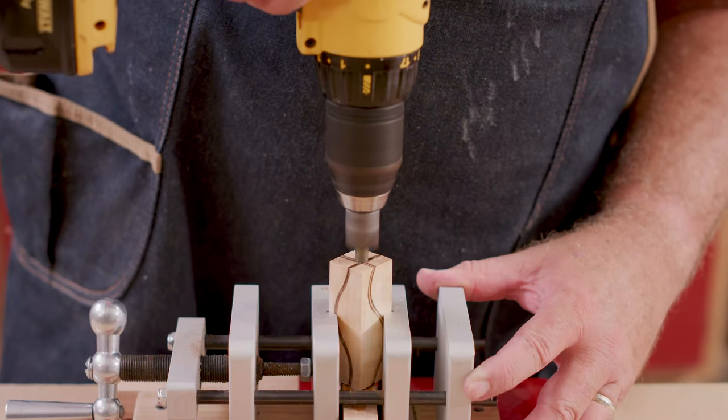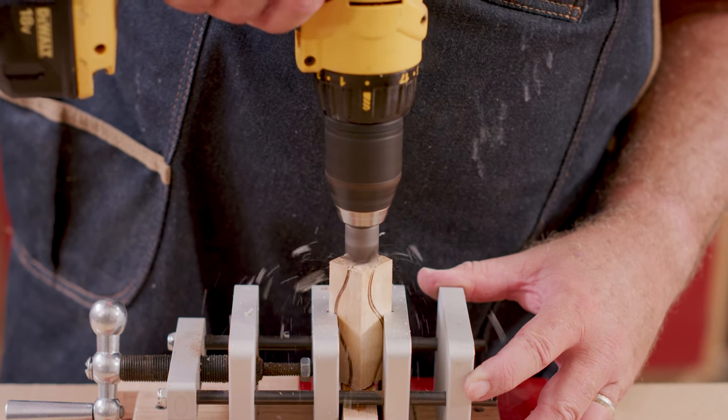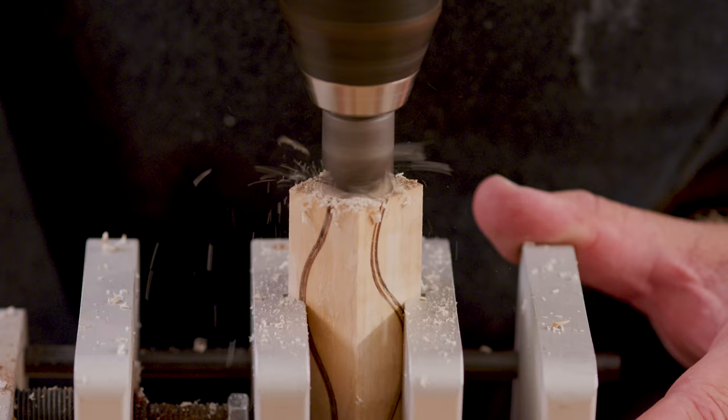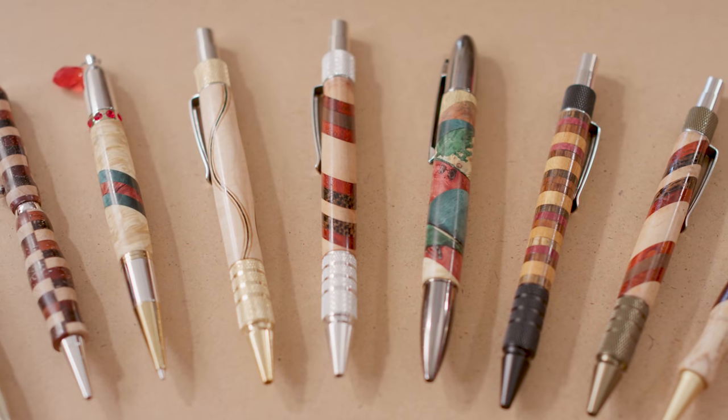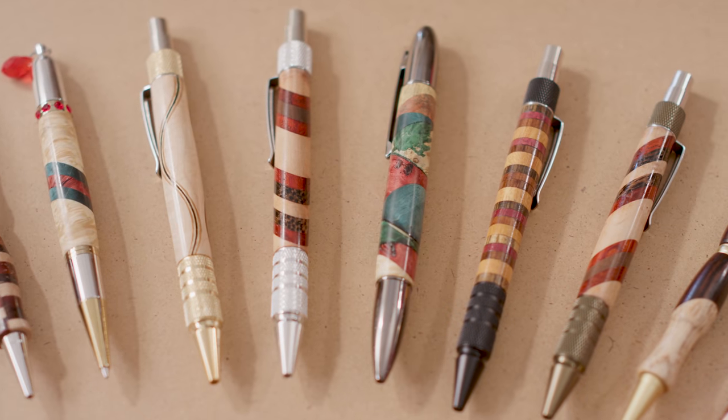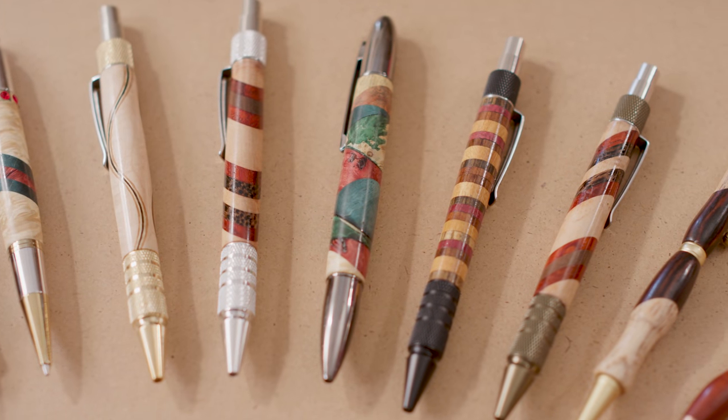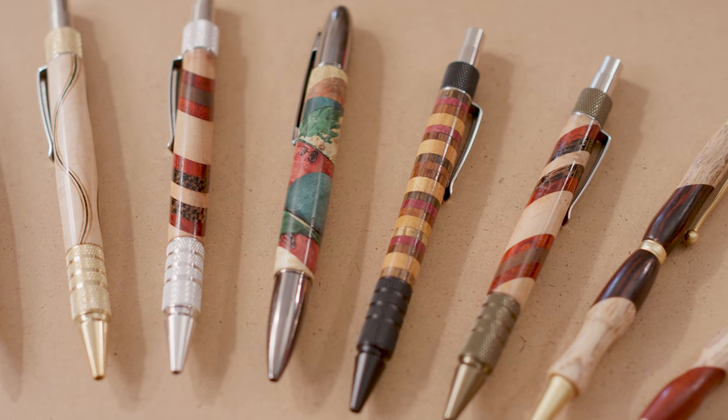Later, trim the ends of the blank flush with the tube and turn the blank to shape for your particular pen style. Laminating your own blanks allows you to create unique designs for stunning turn pens. Try different combinations of woods and patterns to craft your own style.